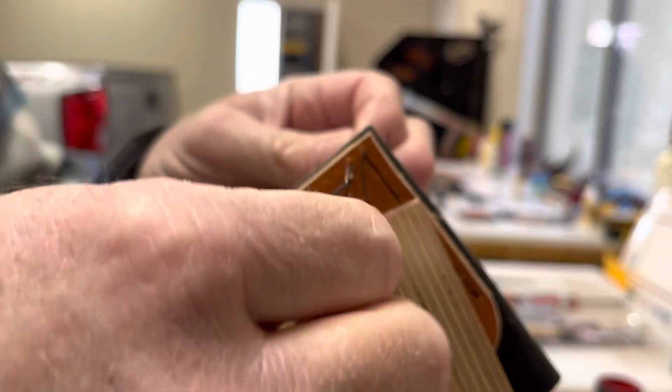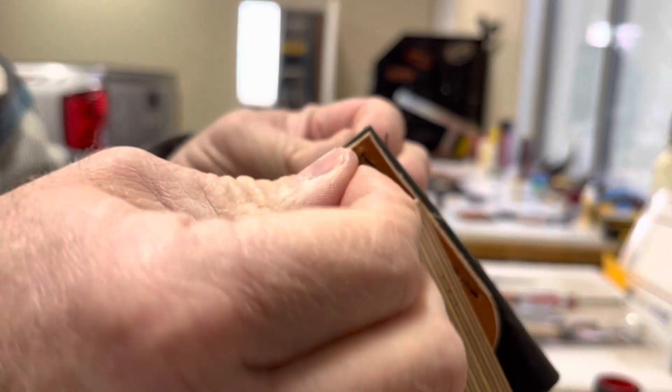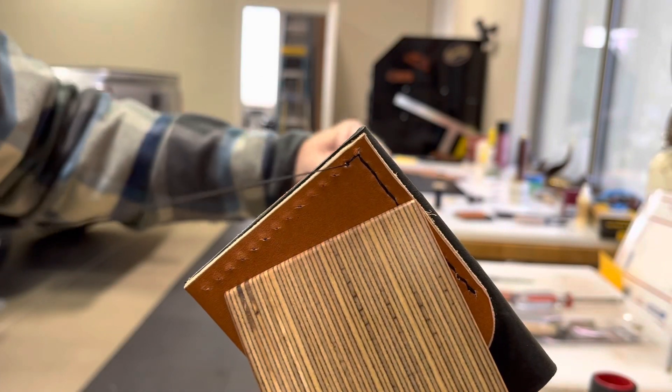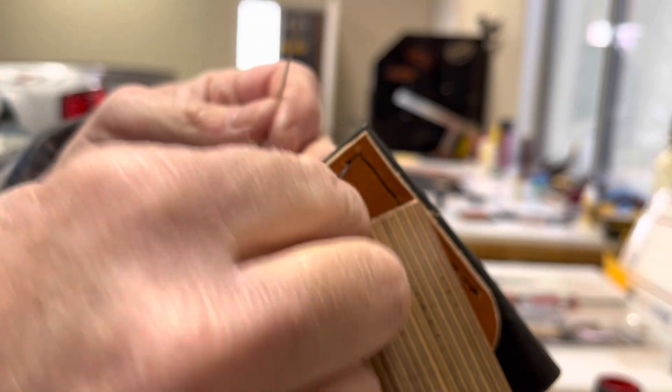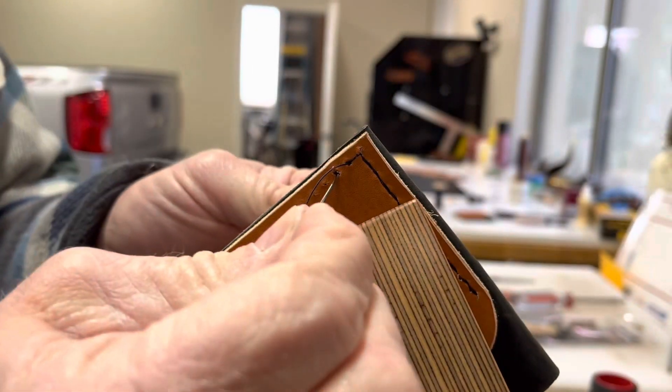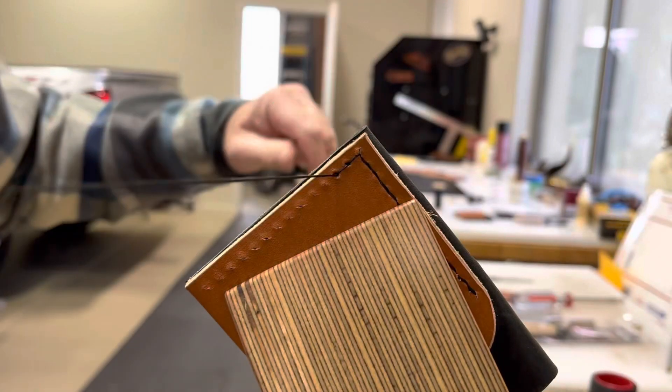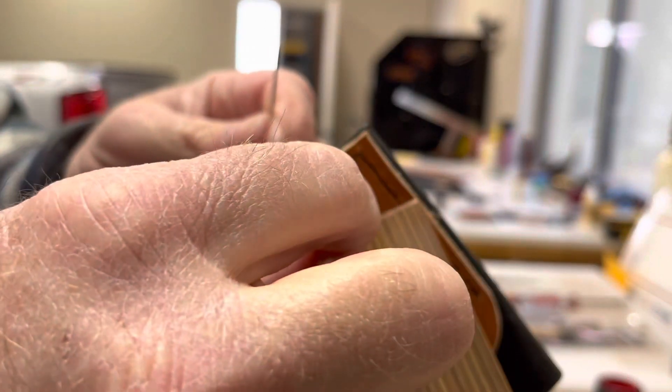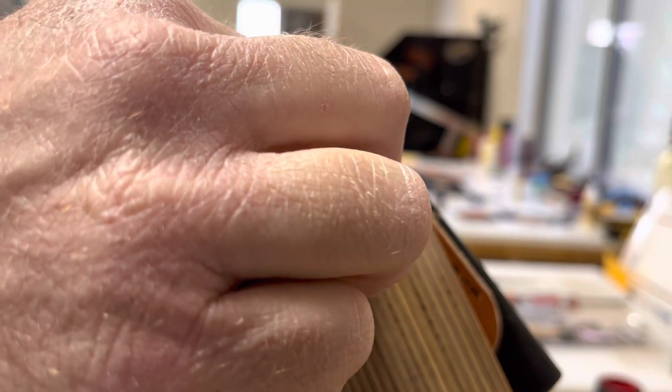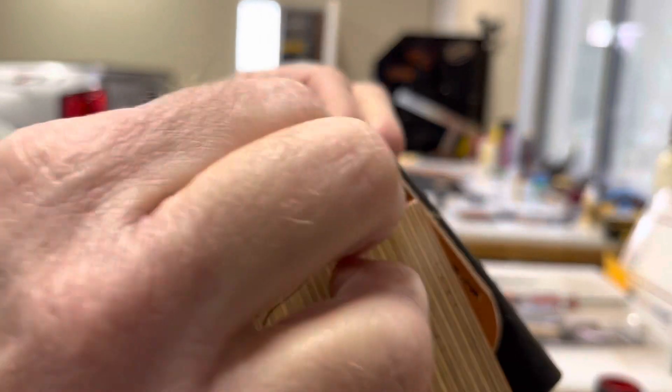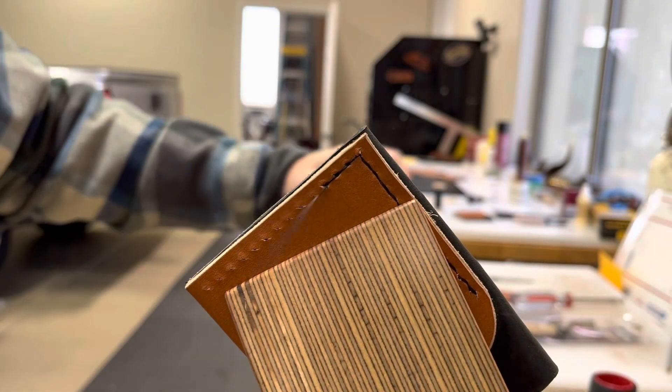And then when I get done, I will sand this bottom edge so that all four layers of leather are exactly the same, and then I will burnish the edge of it. And it'll have a nice look and feel as well.